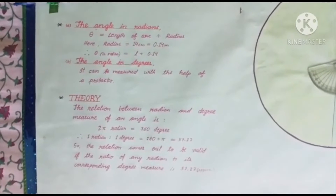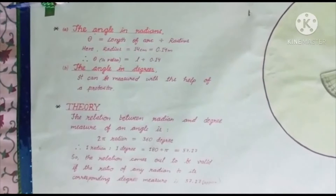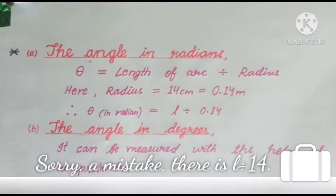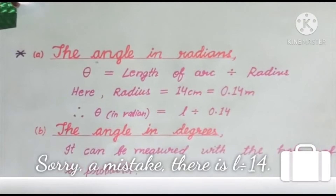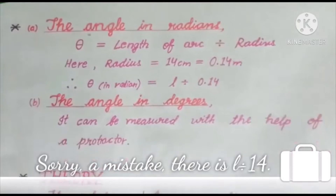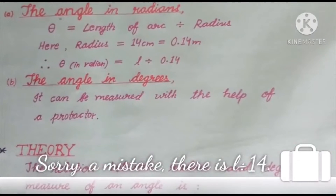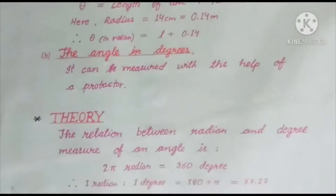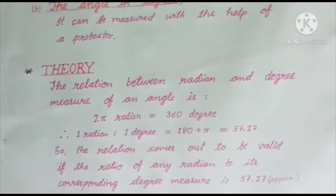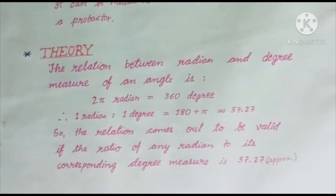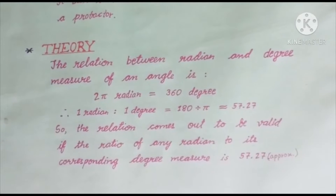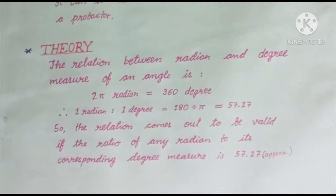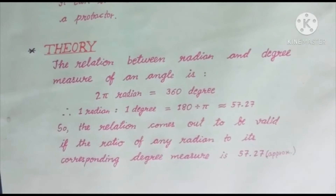As we know, the angle in radians is the length of arc divided by its radius, and here the radius is equal to 14 cm. So theta is equal to l divided by 14. The angle in degrees is measured with the help of the protractor. Now, as we know, 2π radians is equal to 360 degrees.